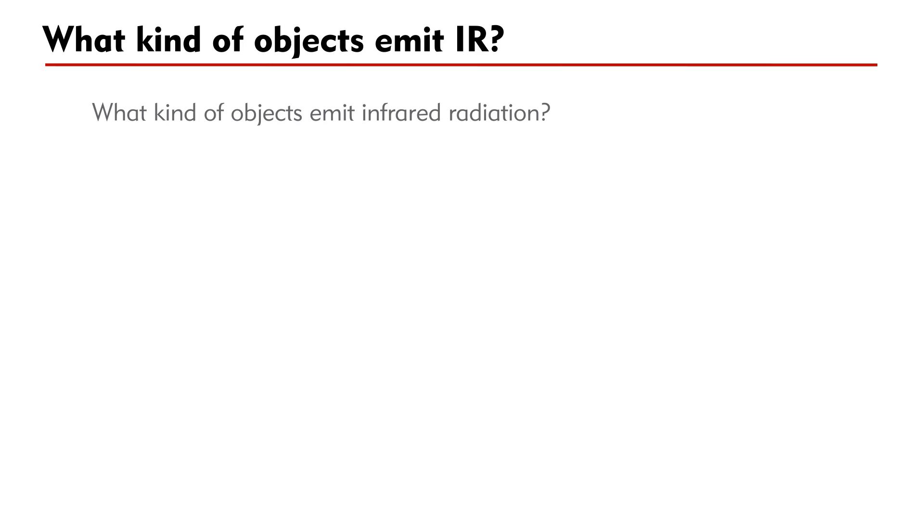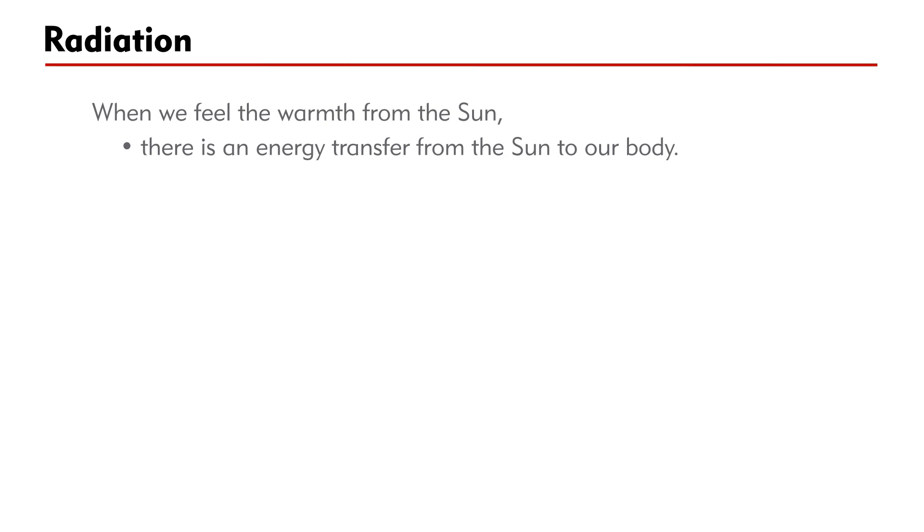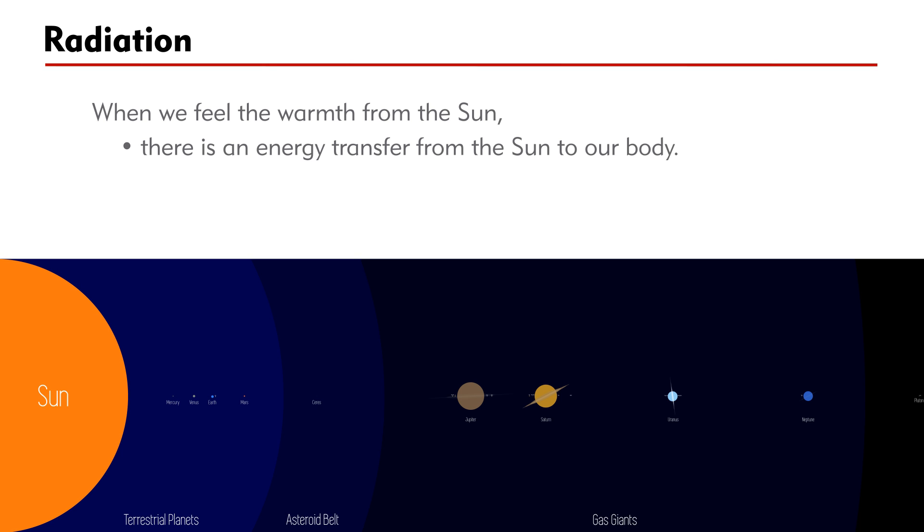What kind of objects emit infrared radiation? The answer is all objects. In fact, all objects above absolute zero emit infrared radiation. When an object absorbs more infrared radiation than it emits, there is a net transfer of energy to the object. This object is heated, which may lead to a temperature rise. When we feel the warmth from the sun, there is an energy transfer from the sun to our body.